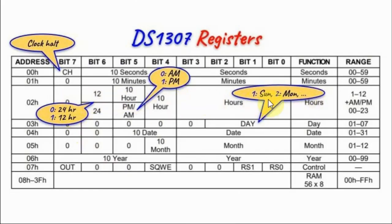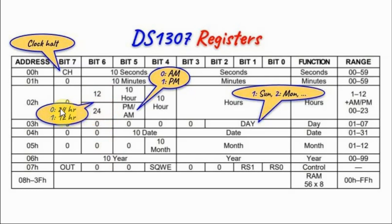The hours register is at location 02 and can be programmed for either 24-hour mode, ranging from 00 to 23, or 12-hour mode with AM and PM, ranging from 1 to 12. Setting a specific bit to 0 selects 24-hour mode; setting it to 1 selects 12-hour mode. In 12-hour mode, another bit indicates AM (0) or PM (1). In 24-hour mode, that bit becomes an additional most significant bit for the tens of hours.